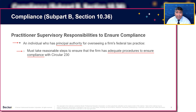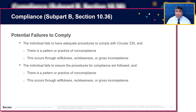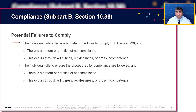Now, not having adequate procedures alone isn't enough. There's also the concept of having to have a pattern of practice of noncompliance. An individual who fails to have adequate procedures to comply with Circular 230 — that's just the first part — but there also has to exist a pattern or practice of noncompliance, or willfulness, recklessness, or gross incompetence.